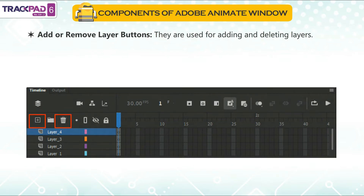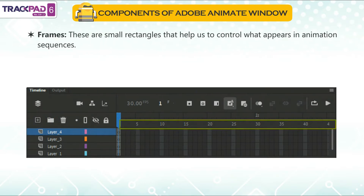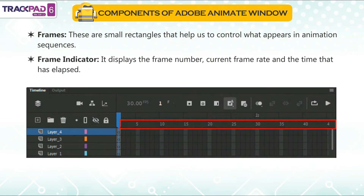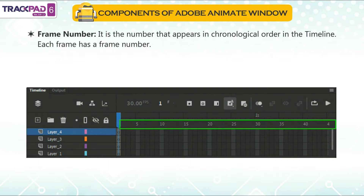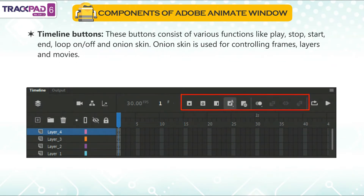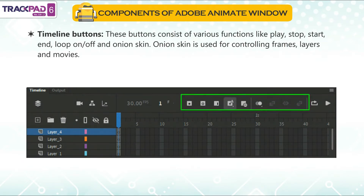Add or remove layer buttons: they are used for adding and deleting layers. Frames: these are small rectangles that help us to control what appears in animation sequences. Frame indicator: it displays the frame number, current frame rate and the time that has elapsed. Frame number: it is the number that appears in chronological order in the timeline; each frame has a frame number. Timeline buttons consist of various functions like play, stop, start, end, loop, on or off, and onion skin. Onion skin is used for controlling frames, layers and movies.